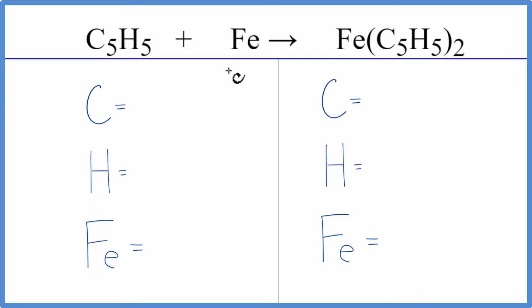So to balance this equation, let's count the atoms up on each side. We have five carbon atoms, five hydrogen atoms, and just one of these irons.